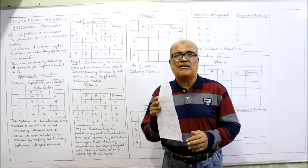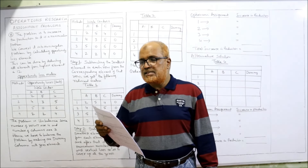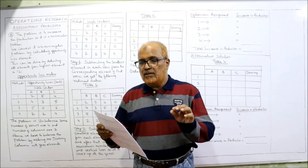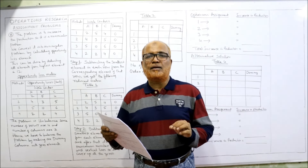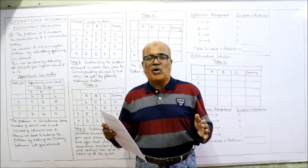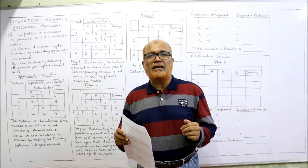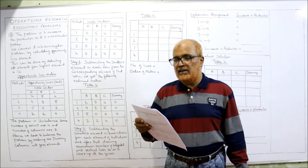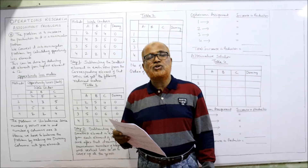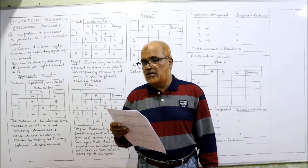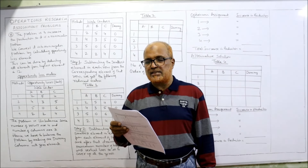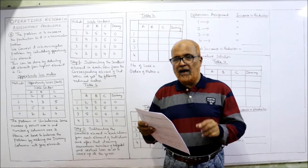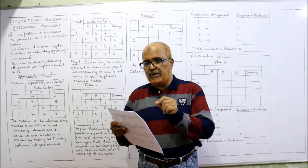Before starting the 8th problem, I expect my viewers to have a printout of the problems given in the link under my description. In this problem, a methods engineer wants to assign four new methods to three centers. This is a new point — there are four methods and three centers, meaning the matrix is 4×3, which is unbalanced. For solving assignment problems we need a balanced matrix — number of rows must equal number of columns. Production is given, so we have to maximize. In the rows, methods 1, 2, 3, 4 are given, and in the columns, work centers A, B, and C are given.